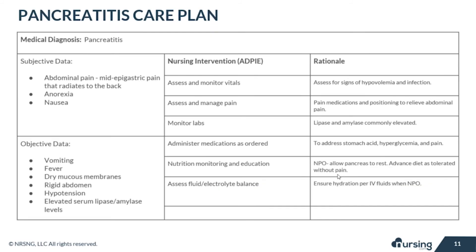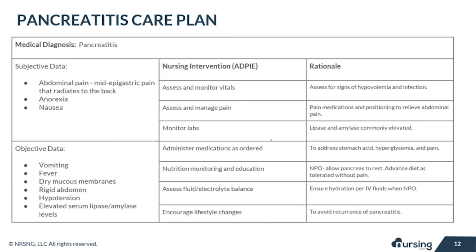The next nursing intervention is to assess fluid and electrolyte balance. This is important because patients may not be eating or drinking enough. Ensure hydration via IV fluids when they are NPO, check their mucous membranes to make sure they are moist, and administer aggressive IV hydration as ordered by the doctor if needed.